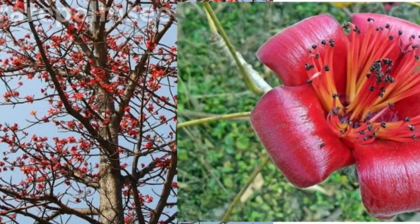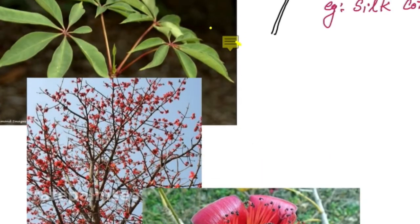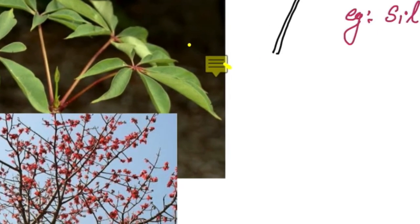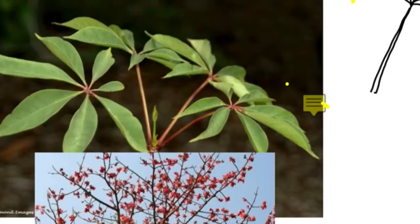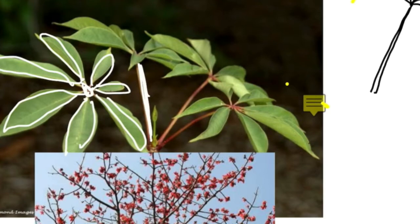This is the flower of silk cotton. The leaves of silk cotton are palmately compound leaves. You can see one, two, three, four, five, six, and seven leaflets arranged at the tip of the petiole. So here is a petiole and at the tip of the petiole, leaflets are arranged — palmately compound leaf, example: Bombax or silk cotton.